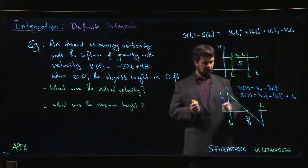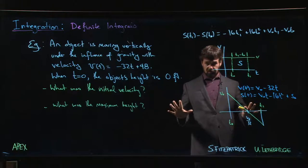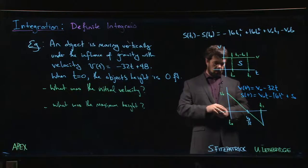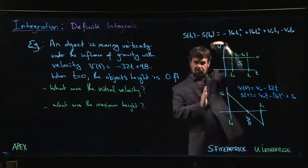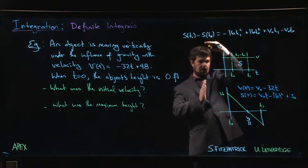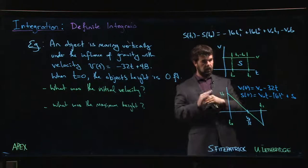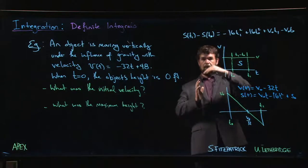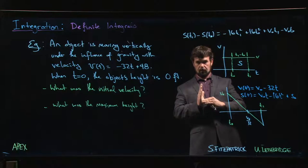This is the graph of velocity as a function of time. We're starting with some initial positive velocity, so the object is traveling up. But as it travels up it slows down because gravity is acting against it, like throwing a ball up into the air. At some point it's going to reach its maximum height and start to come back down.